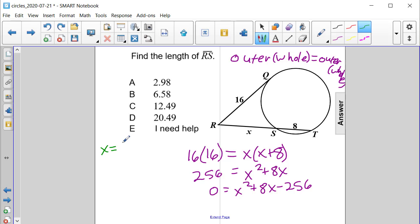So we have X is equal to negative 8 plus or minus the square root of 8 squared minus 4 times 1 times negative 256, all over 2 times 1. So that's going to simplify to negative 8 plus or minus the square root of 64 plus 1024, which is going to give us 1088, all over 2.